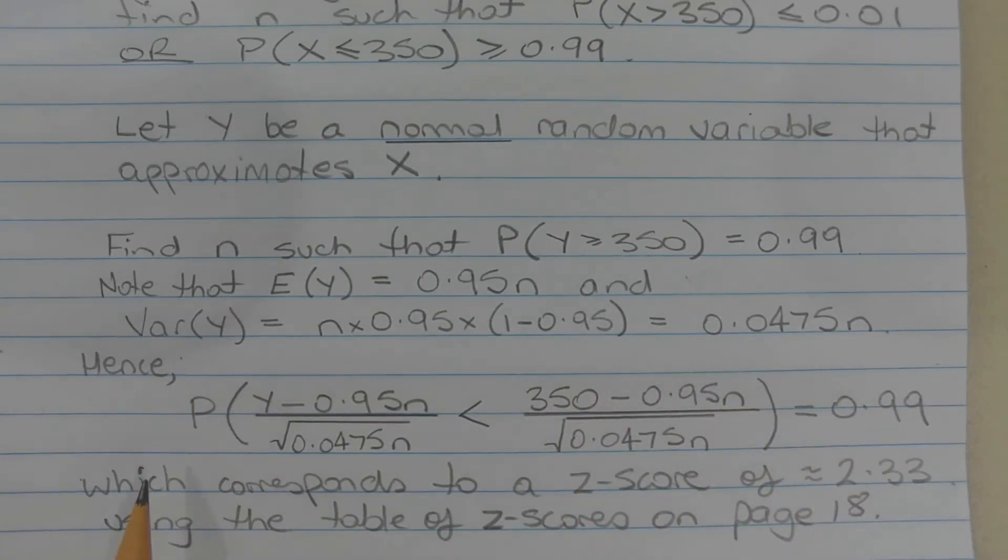Hence, we want the probability that (Y minus 0.95N) over the square root of 0.0475N is less than (350 minus 0.95N) over the square root of 0.0475N equals 0.99. This is the Z-score formula. This corresponds to a Z-score of 2.33 using the table of Z-scores on page 18 or using the probability distribution function on your calculator.